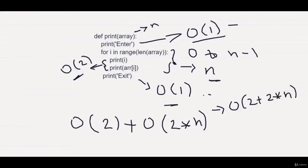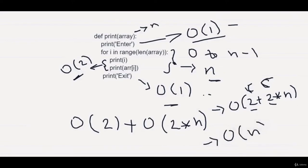The 2s are constants — they can be replaced with C, and we can ignore C whenever calculating our Big O time complexity. So this becomes O(n), because we ignore constants during addition. This simplifies to O(n).